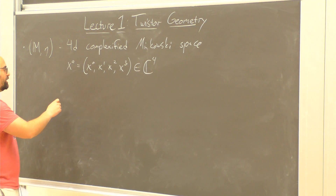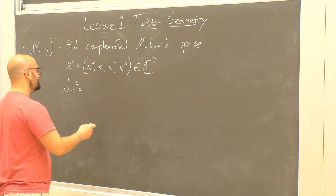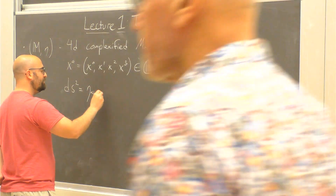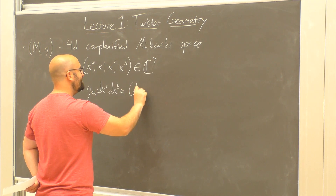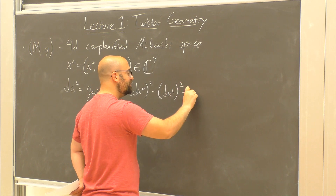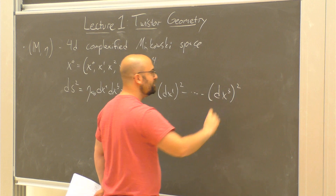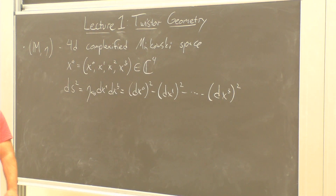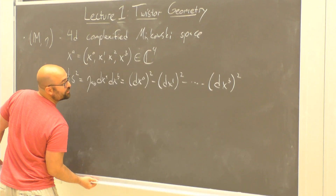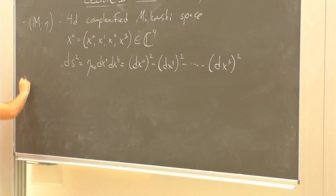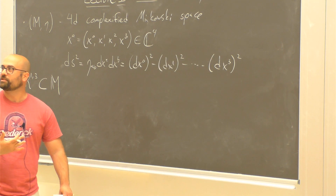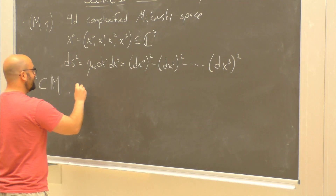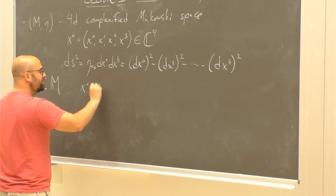I equip this manifold with a holomorphic metric. The line element ds² = η_{ab} dx^a dx^b — so dx^0 squared minus dx^1 squared minus dx^2 squared minus dx^3 squared. Holomorphic means there are no bars or complex conjugates anywhere. This is a holomorphic metric on C^4. You can of course recover Lorentzian real Minkowski space — R^{1,3} sits inside complexified Minkowski space by imposing reality conditions on these coordinates, saying the x^A are valued in R^4 rather than C^4.